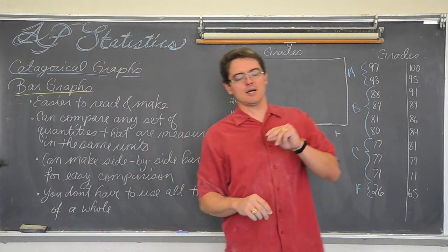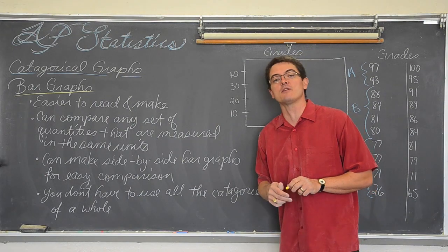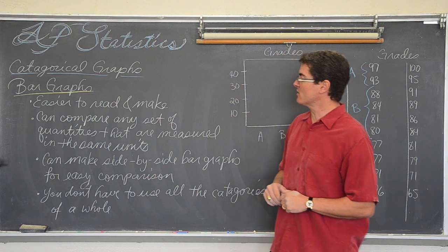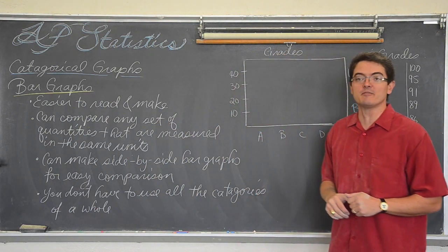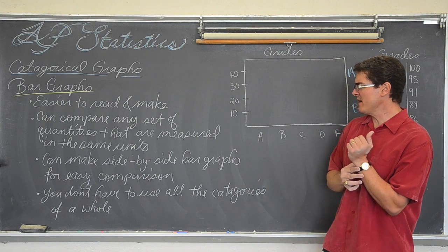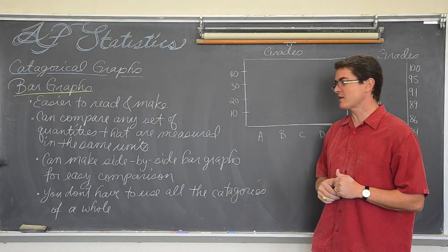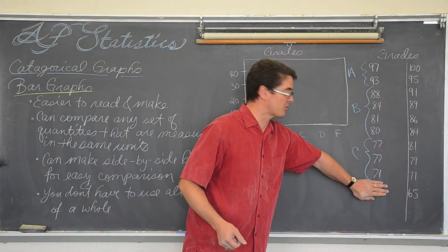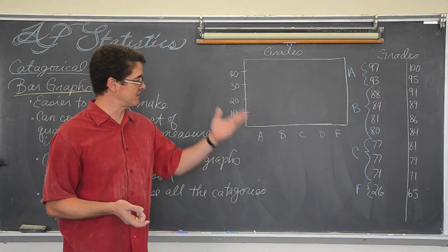The second type of categorical graph that we have. Much more flexible. Much more common. And we make these much more often in statistics. Here are some benefits. They are easier to make and read. They can compare any set of quantities that are measured in the same unit of measure. In other words, all your categories don't have to come from the same one singular whole. We can make side by side bar graphs for easy comparison. We are going to do that in a second. And you don't have to use all the categories of a whole. Now, I am going to. That means that if I don't want to include this person that got an F just because they didn't make up a test, I don't have to. But I am going to do that just for this purposes.